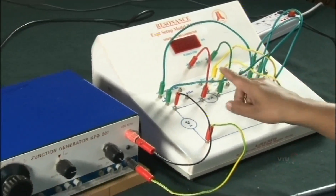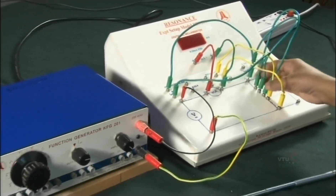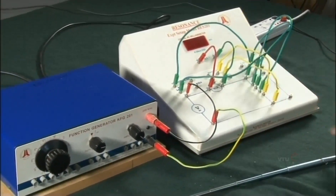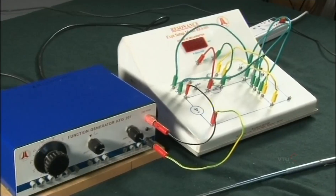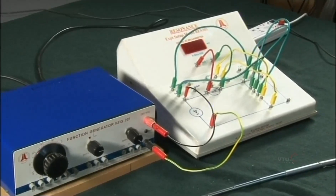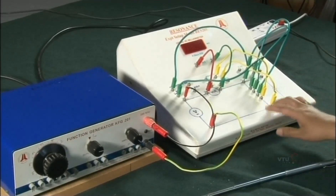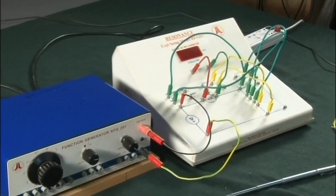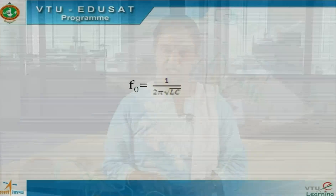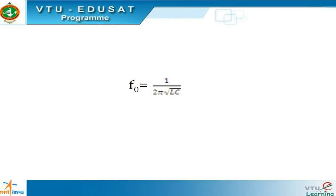The chosen values of L and C give a natural frequency of the circuit as given by the equation 1 divided by 2π√(LC), which turns out to be 5 kHz.